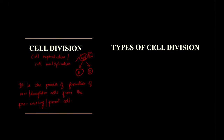Now, coming to the types of cell division, there are three types: the first is amitosis, mitosis, and meiosis.